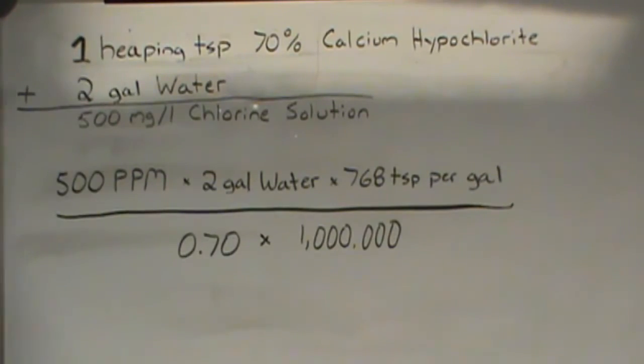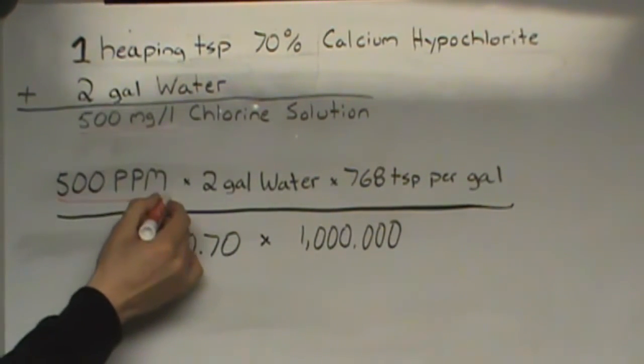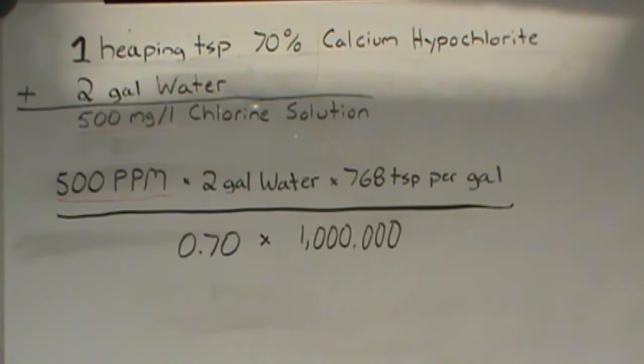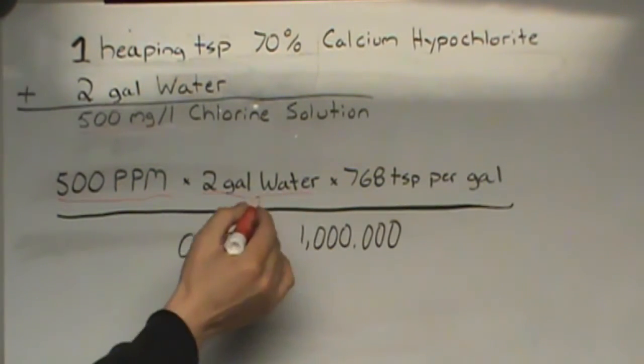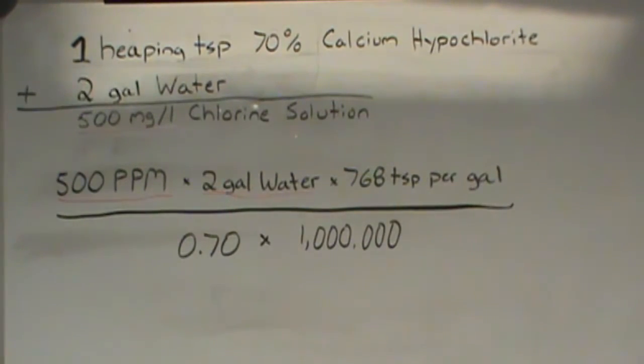So what we've done is we've taken all of this information and we have expressed it into a mathematical calculation. So the very first thing that we have done is we have taken 500 milligrams per liter and we have expressed that as 500 ppm or parts per million. One milligram per liter is the exact same as one ppm or parts per million. This is the target concentration of chlorine in our solution that we hope to achieve. Next we multiply that by two gallons of water. This is the amount of water that we have available to us in which we are going to add our calcium hypochlorite.